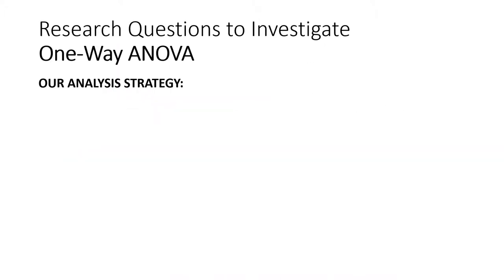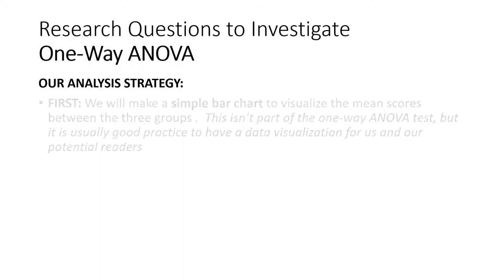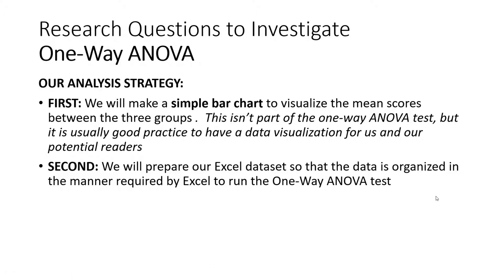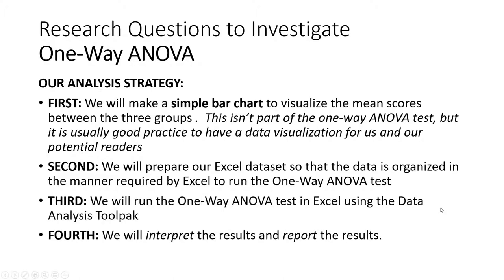For our analysis strategy for the one-way ANOVA in Excel, we'll first make a simple bar chart to visualize the mean scores between the three groups — just to visually inspect whether there's something interesting. Then we'll do some data preparation in Excel to get the dataset into the right format to run the one-way ANOVA. Next we'll implement the test, make sense of it, and finally interpret and properly report those results. This is our standard protocol when approaching basic statistical testing in marketing research.